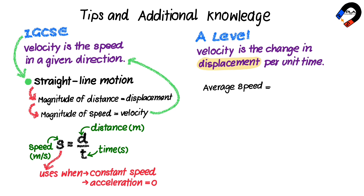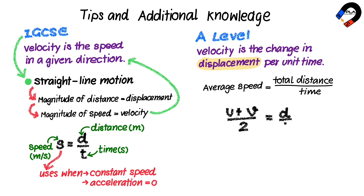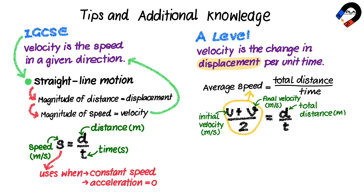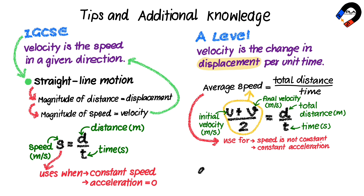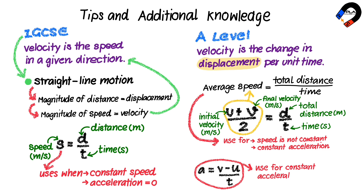Average speed is the total distance per unit time. So we can get the equation: (u plus v) over 2 equals D over T, where (u plus v) over 2 is the average speed, u is initial speed in meters per second, v is final speed in meters per second, D is total distance in meters, and T is time taken in seconds. This equation is used when speed is not constant but acceleration is constant. The equation a equals (v minus u) over t is used when acceleration is constant only. However, we can find the instantaneous acceleration when it is not constant from the gradient of the tangent line of a speed-time graph. This will be explained in the next video.